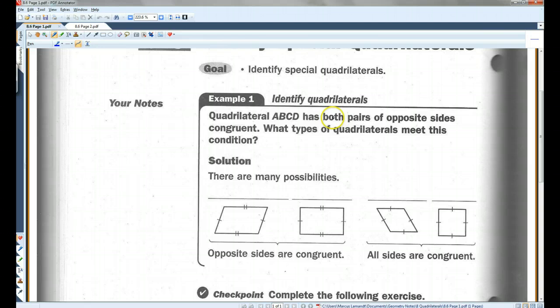Quadrilateral ABCD has both pairs of opposite sides congruent. What types of quadrilaterals meet this condition? Well, opposite sides congruent, this one is a parallelogram.